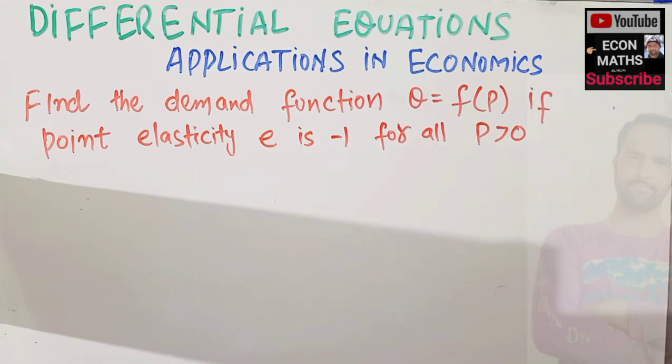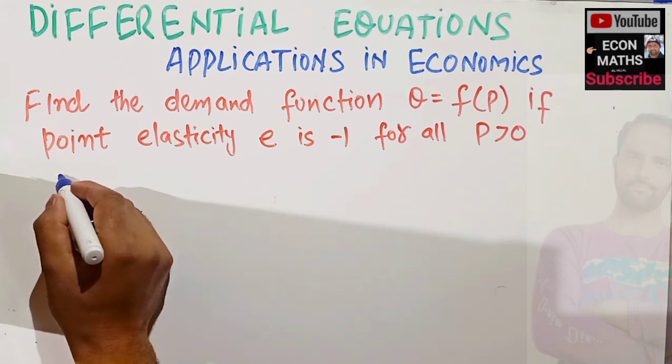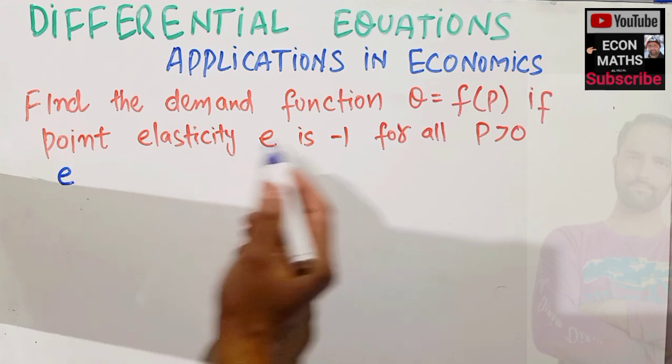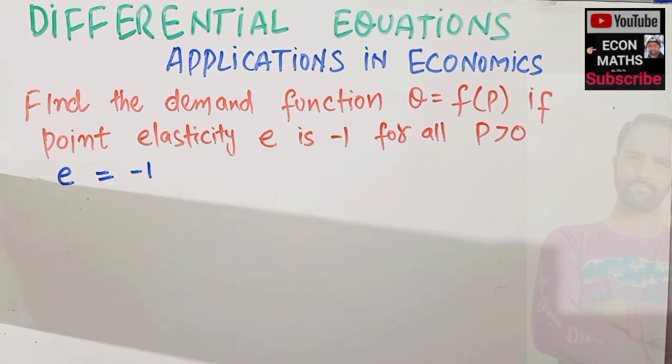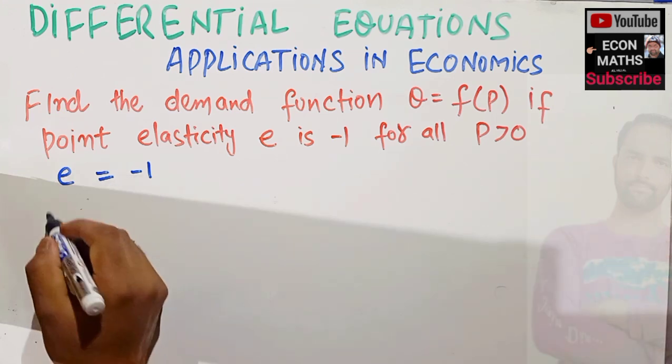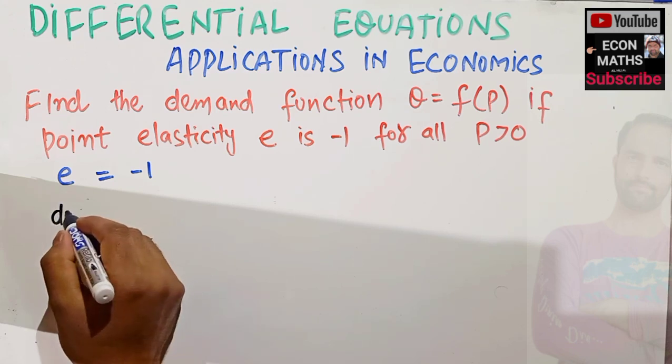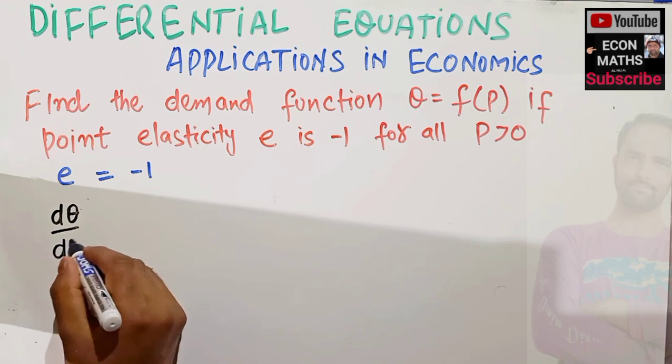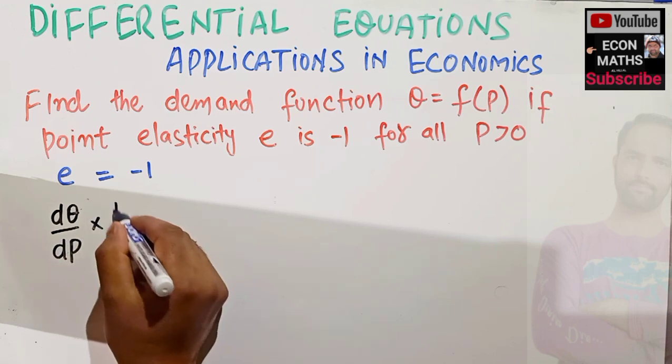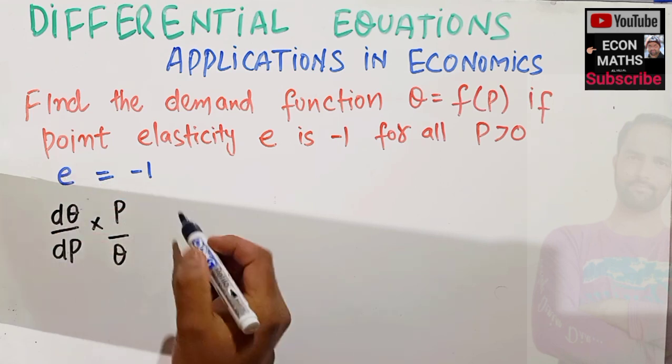Now what is the elasticity of demand that is being given us? Elasticity of demand is equal to minus one. But we know that elasticity of demand is simply equal to, so in place of e I can also write change in output upon change in price times P upon Q. So e is actually this and we are being told it is equal to minus one.